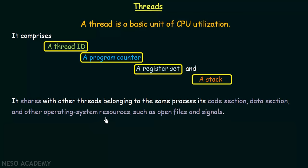A process can contain different threads, and the threads belonging to the same process will share resources like open files, signals, code section, data section, and other things. So that is how a thread is basically made up.